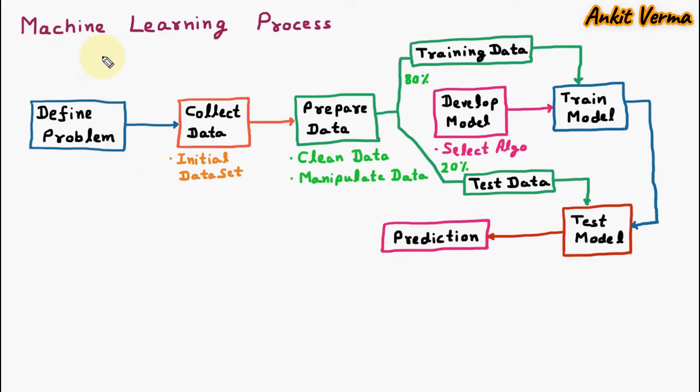So in the machine learning process, whenever we are going to develop some model, first of all we are going to define the problem or the objective. Then we collect the data which creates the initial data set. Then afterward we clean the data and manipulate the data and data is prepared.